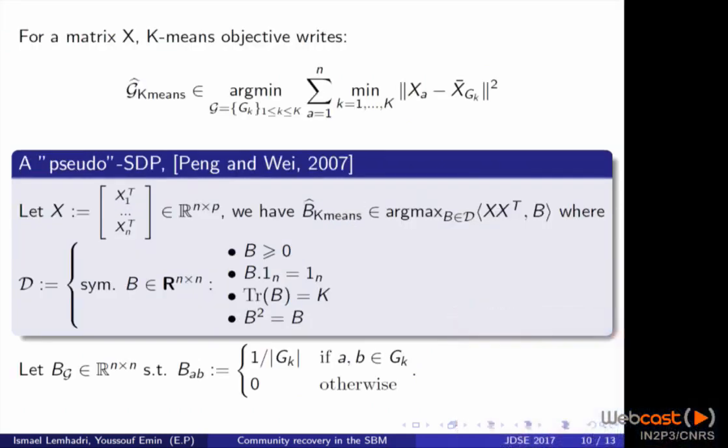Now to the general case. So the way we started this problem was to look at K-means. K-means, the most famous clustering algorithm probably, just tells you that you'd like to be able to cluster your data points in order to minimize this criterion over here. And this criterion can be rewritten as a maximization problem, which is almost like a semi-definite program. When you look at the set over which you are optimizing, you can see that you have these constraints over the matrices. They are all almost linear, except the last one. So the last one is going to need some work. And we are going to rewrite this B squared equal B to relax it in order to get a convex optimization problem.